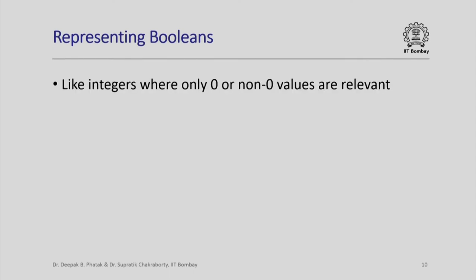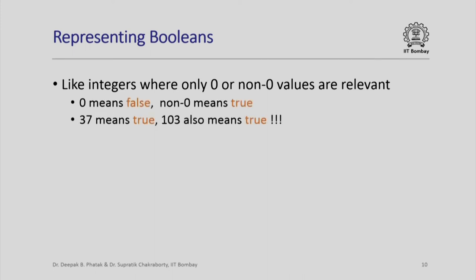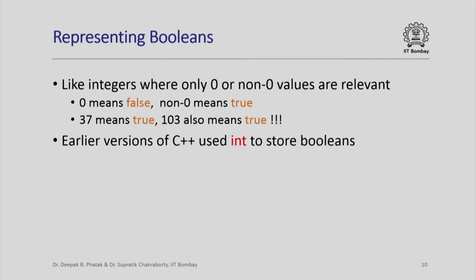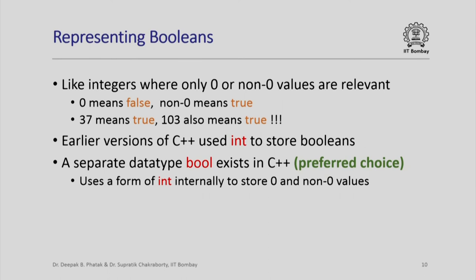How do we represent Booleans inside a computer? Booleans are just like integers where we are only interested in whether they have the value 0 or nonzero. If it has the value 0, the Boolean is false; if it has a nonzero value, it is true — so 37 or 103 could both mean true. Earlier versions of C++ used int to store Booleans, but modern C++ implements a separate data type called bool, which is the preferred choice.